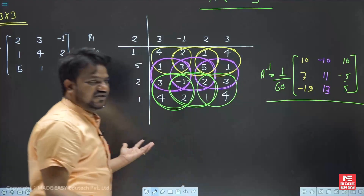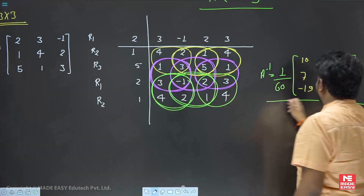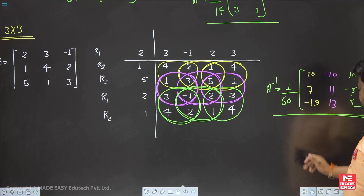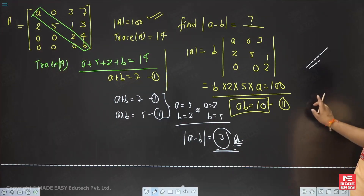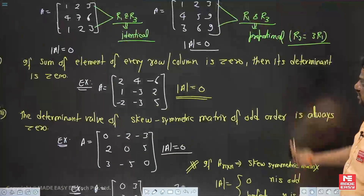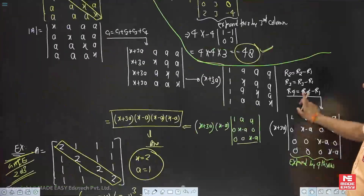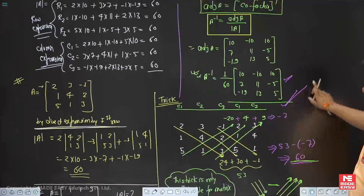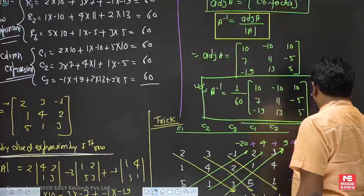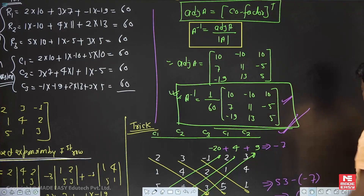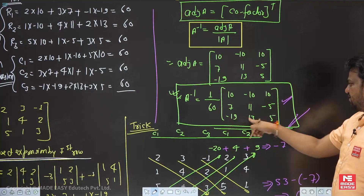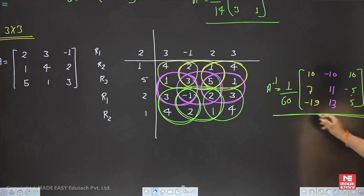This is A inverse — we can calculate it directly by this trick. We have already calculated A inverse for this question previously. Let's verify: A inverse has first row [10, -10, 10], second row [7, 11, -5], and third row [-19, 13, 5]. This matches our earlier calculation. So this is confirmed as A inverse.